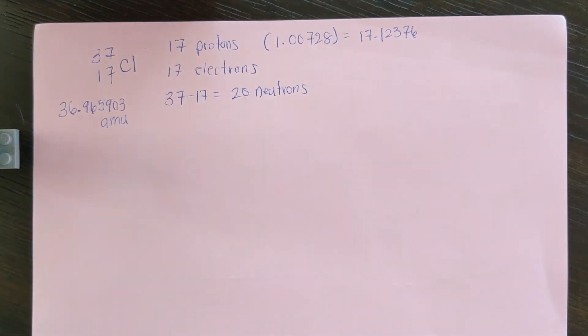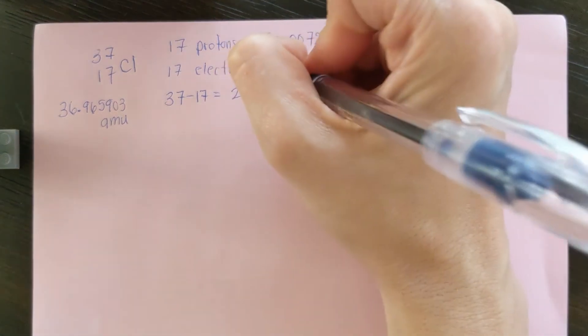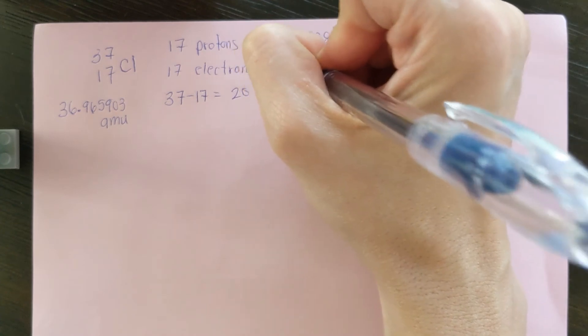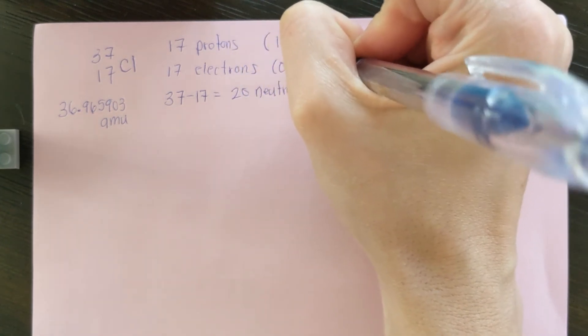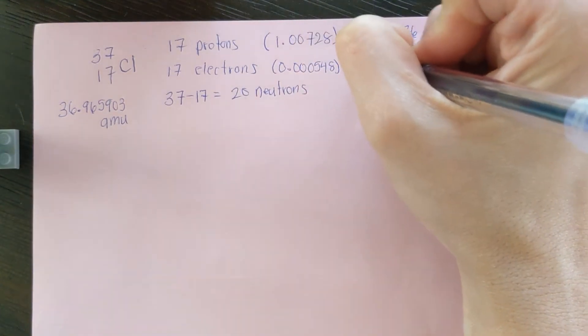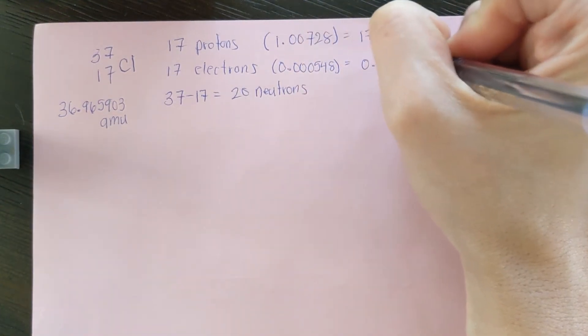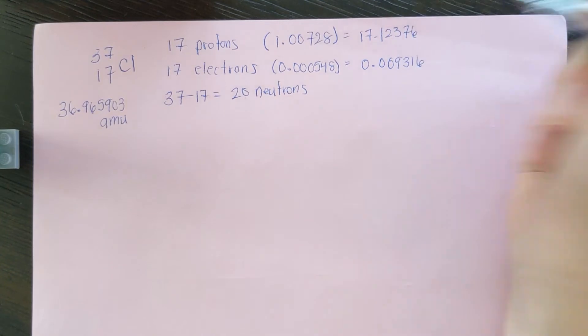And we'll do that with the electrons. So that's 0.000548, which gives us a mass of 0.009316 atomic mass units.